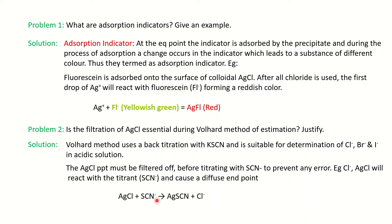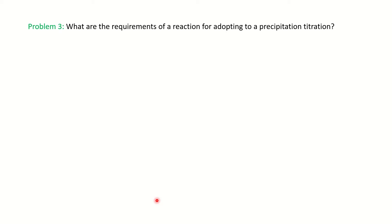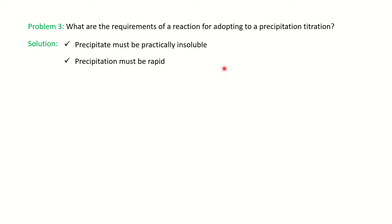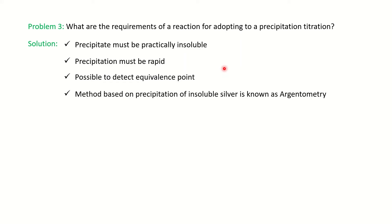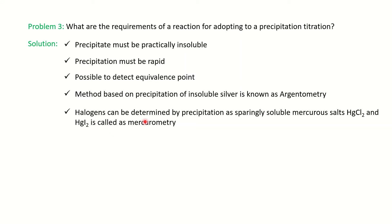Next: what are the requirements of a reaction for adopting a precipitation titration? First, the precipitate must be practically insoluble. Second, precipitation must be rapid. Third, there should be a possible way to detect the equivalence point. A titration based on the precipitation of insoluble silver is known as argentometry. If you have a halogen that can be determined by precipitation of an insoluble or sparingly soluble mercuric salt, it is called mercurometry.